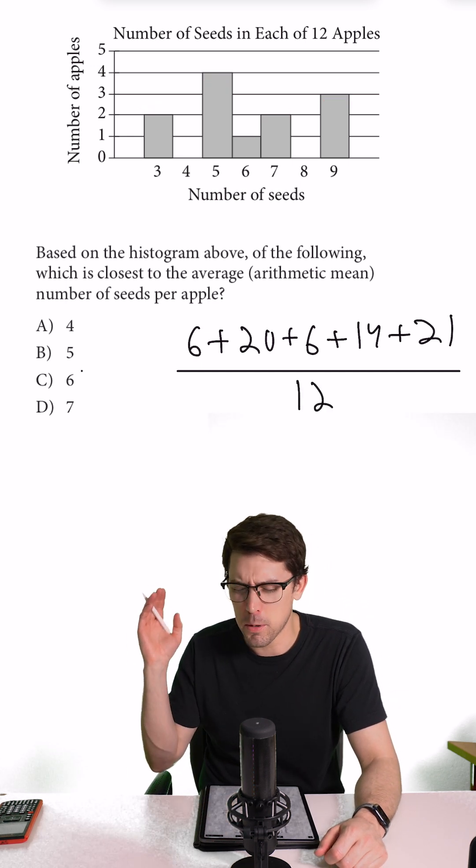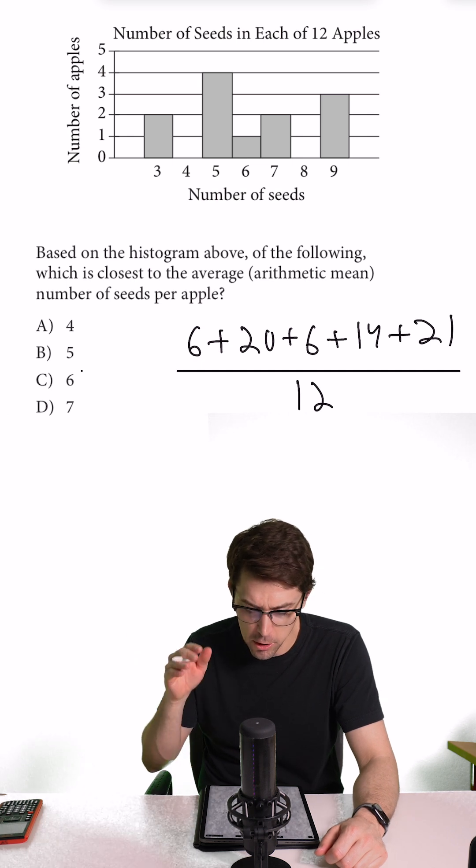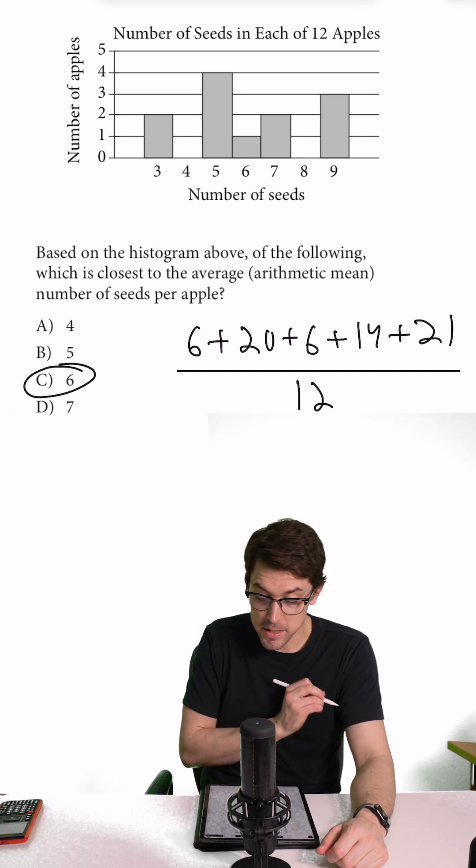Go ahead and add that up and then put that in your numerator, divide it by 12 into your calculator, and you are going to get an answer of C6.